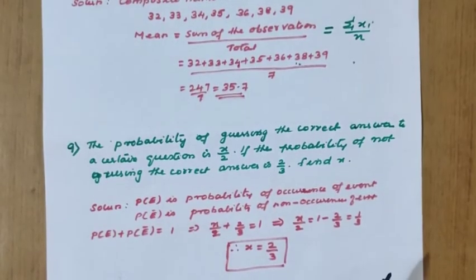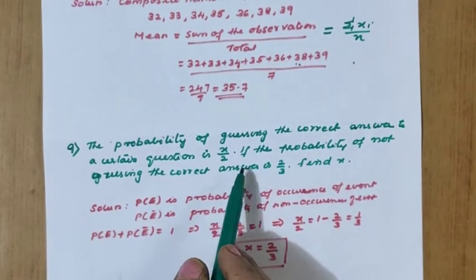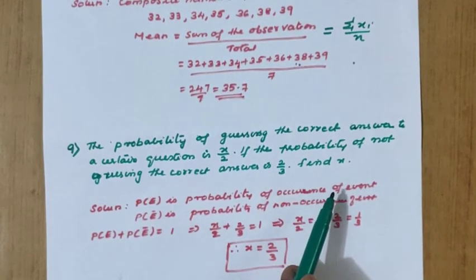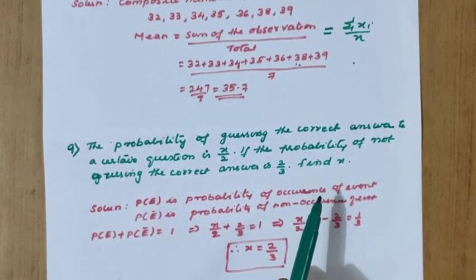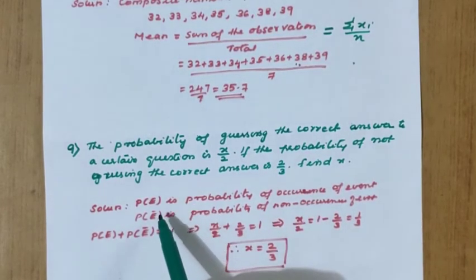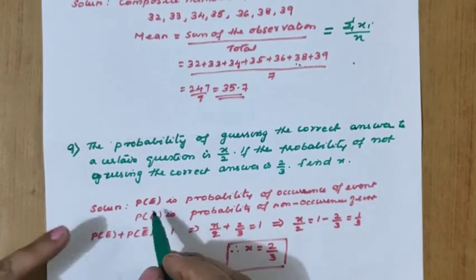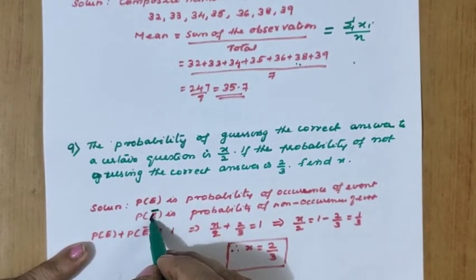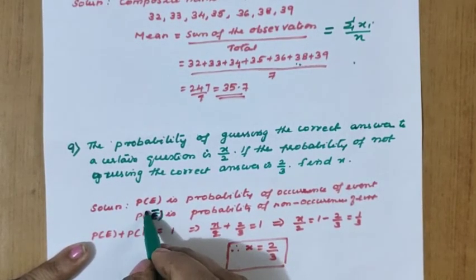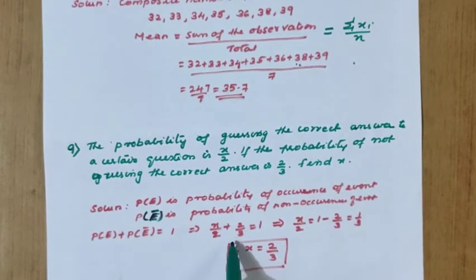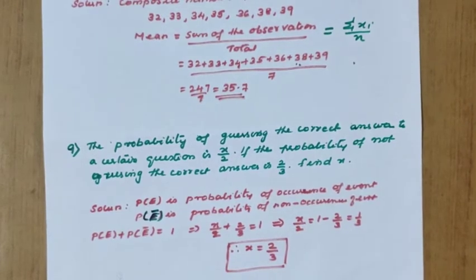The probability of guessing the correct answer to a certain question is x/2 and the probability of not guessing the correct answer is 2/3. Find x. We know that the sum of probability of occurrence and non-occurrence equals 1. So substituting: x/2 plus 2/3 equal to 1, and solving for x gives x equal to 2/3.